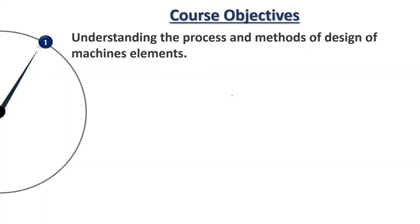The first objective is understanding the process and methods of design of machine elements. In this course we will teach you how to design different machine elements, for example welded joints, clutches, brakes, springs, and gears.